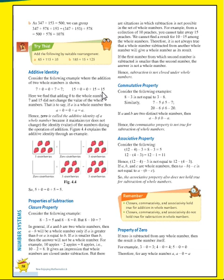That is to say, if a is a whole number, then a plus zero equals zero plus a equals a. Hence, zero is called the additive identity of a whole number, because it maintains or does not change the identity or value of the number during the operation of addition.